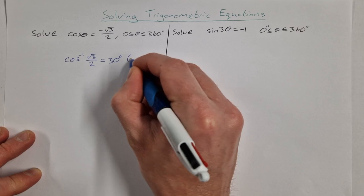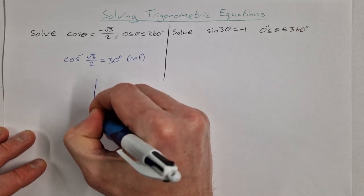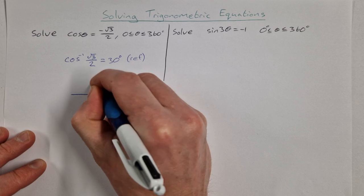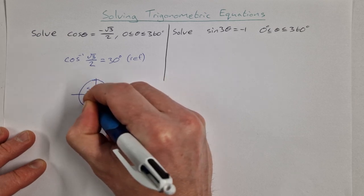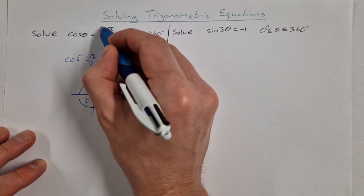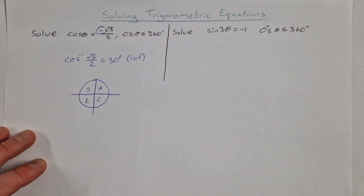Now that's our reference angle, 30 degrees. What we do then is we go to our unit circle. You write in CAST and we're looking for where is cos negative because the original question has a negative root 3 over 2.